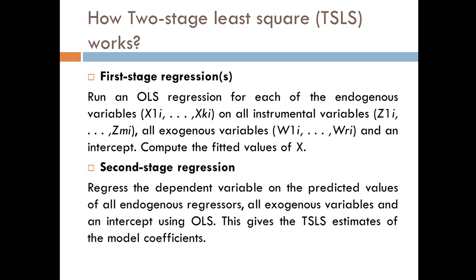Stage No. 2 is we regress the dependent variable on the predicted values of all endogenous regressors, all exogenous variables and an intercept using OLS. This gives the two-stage least square estimates of the model coefficients.